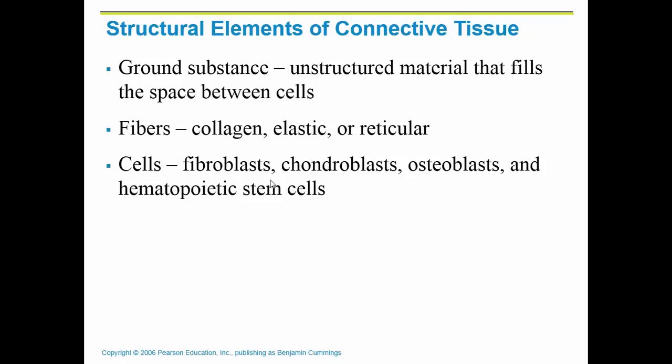And then there are those cells that came from mesenchyme: the fibroblasts that will become fibrocytes, chondroblasts that will become chondrocytes, osteoblasts that become osteocytes, and hematopoietic stem cells that will become all of the parts of the blood.